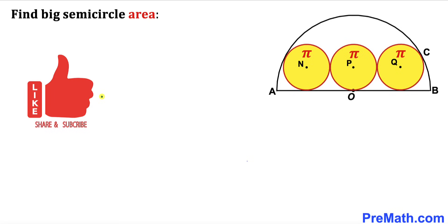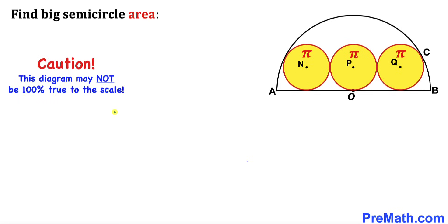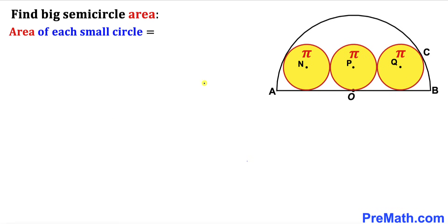Please don't forget to give a thumbs up and subscribe, and keep in mind that this figure may not be 100% true to scale. Let's get started. We know the area of each of these small circles is π centimeter square, and now we are going to calculate the radius of these small circles.